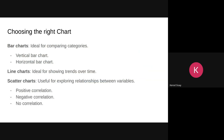Starting with bar charts — these are ideal for comparing categories. For example, we might have a gender category with male and female, and we want to know the average pay to understand if there's a pay gap in the company. For line charts, they're ideal for showing trends over time — for instance, how a certain group of employees behaves with respect to salary over time.